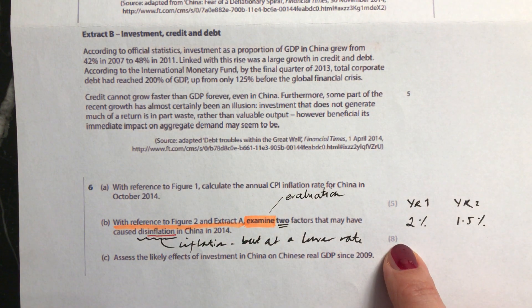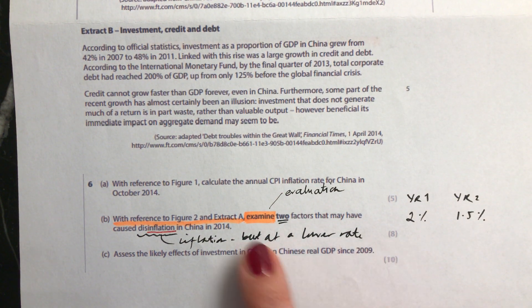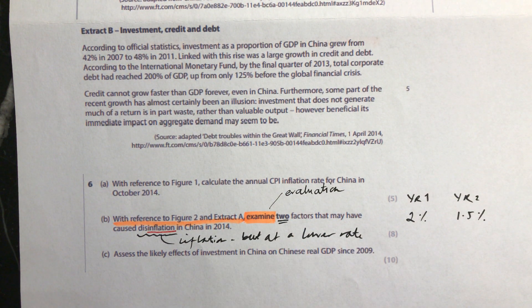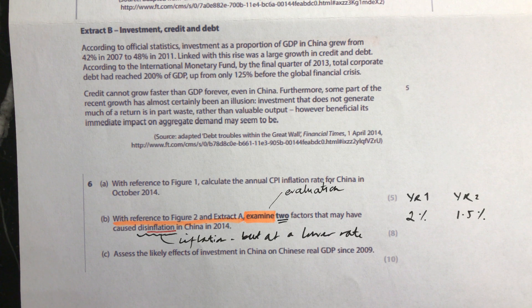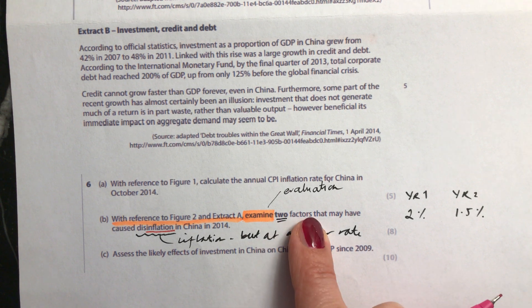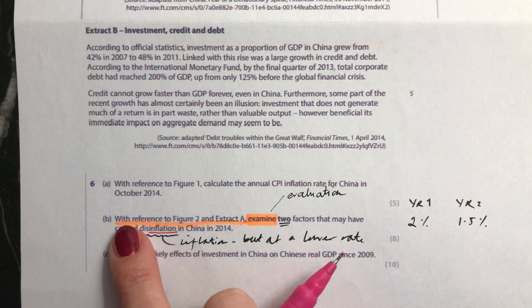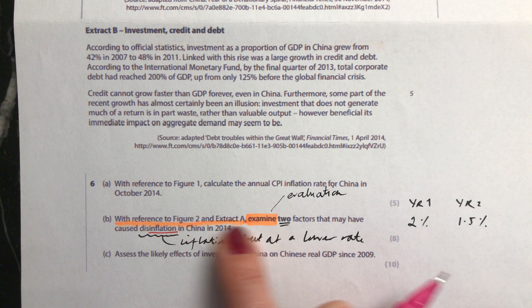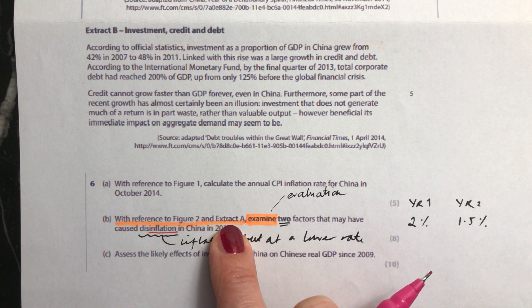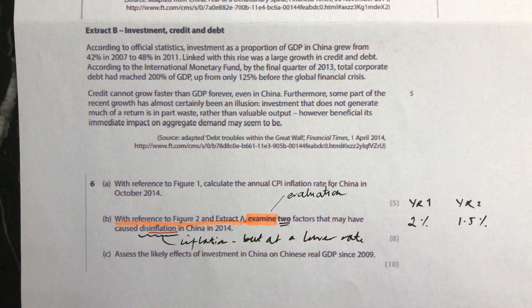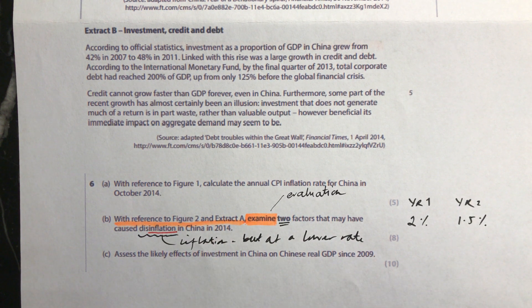Because it's an eight-mark 'examine' question, you don't need a conclusion. You just need to make sure you have your two factors and evaluate each of them. And don't forget to refer to figure 2 and extract A, as the question instructs.